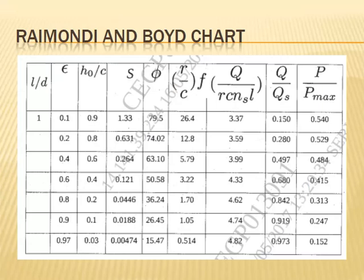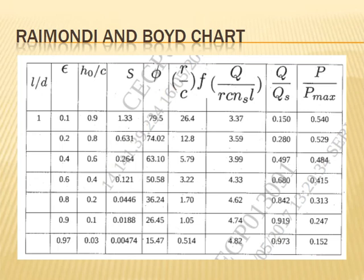Those unitless parameters have various variables — first are design variables and second are performance variables. Design variables are under the control of the designer, who can decide their values. The design variables are: journal speed, viscosity of lubricant, unit bearing pressure or load per projected area, and bearing dimensions such as radius, clearance, length, and bearing arc. Note that journal speed partially depends on the application where the hydrodynamic bearing is used.